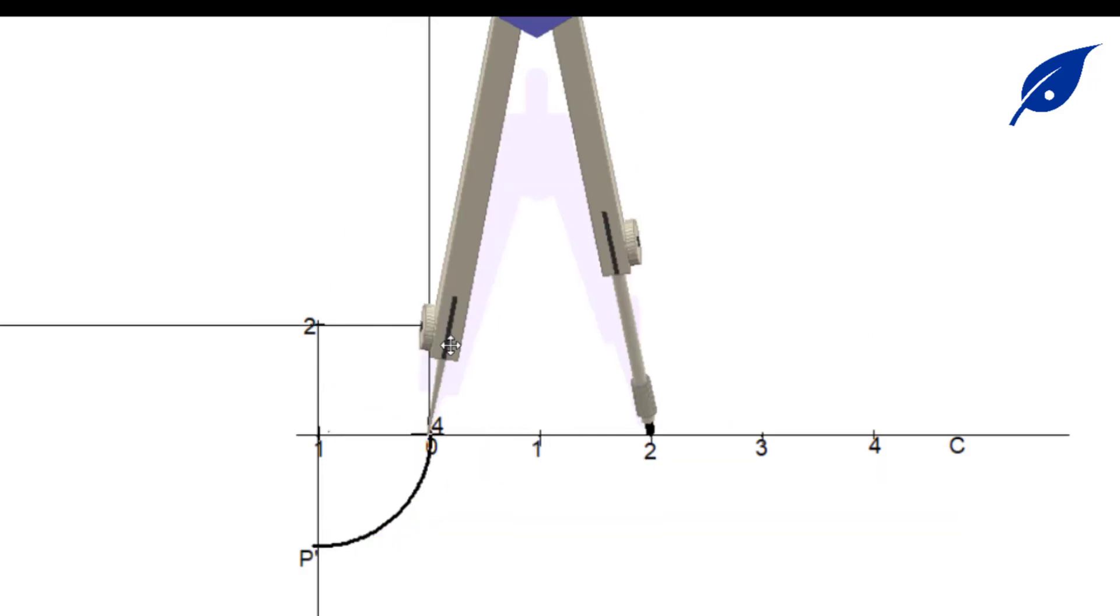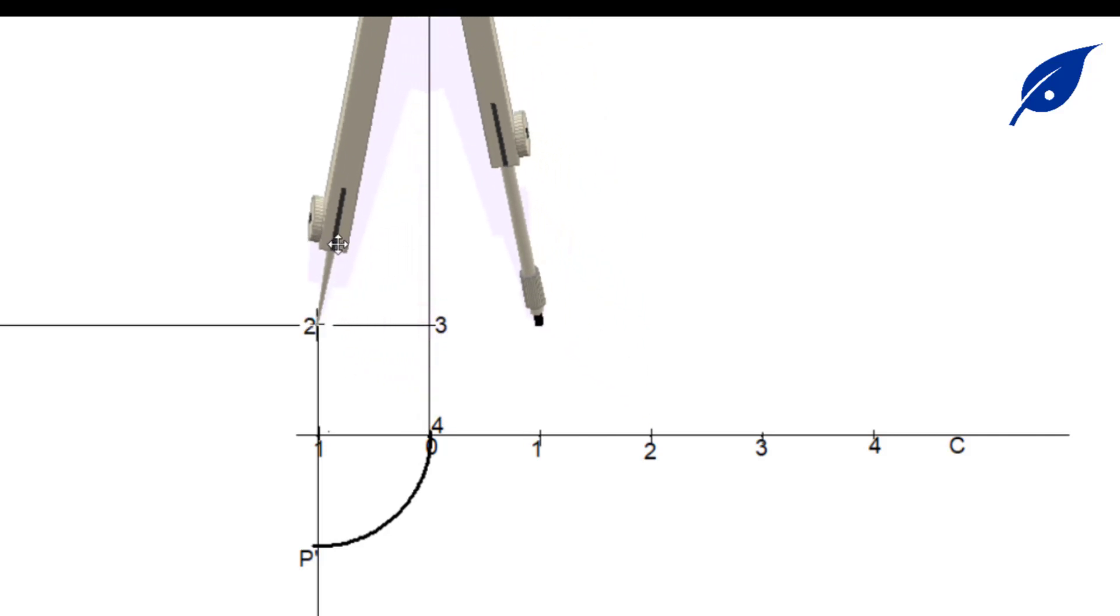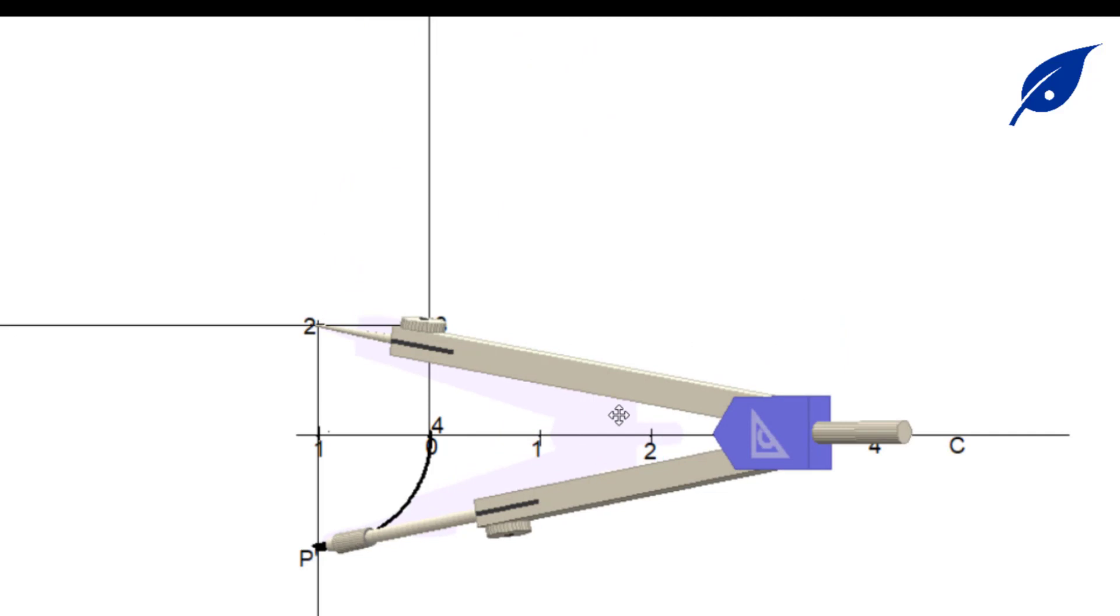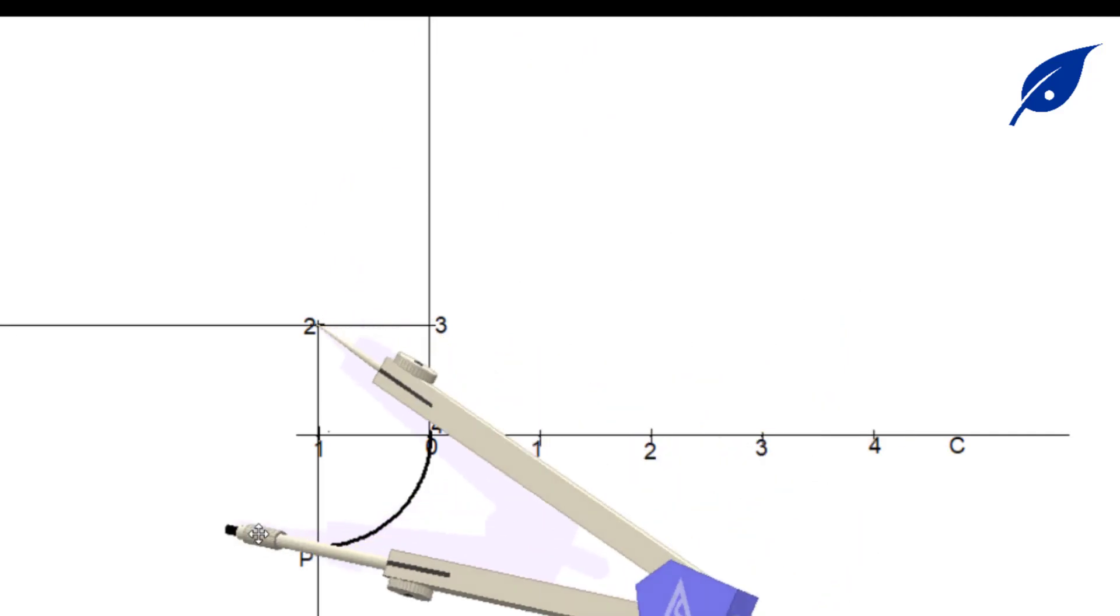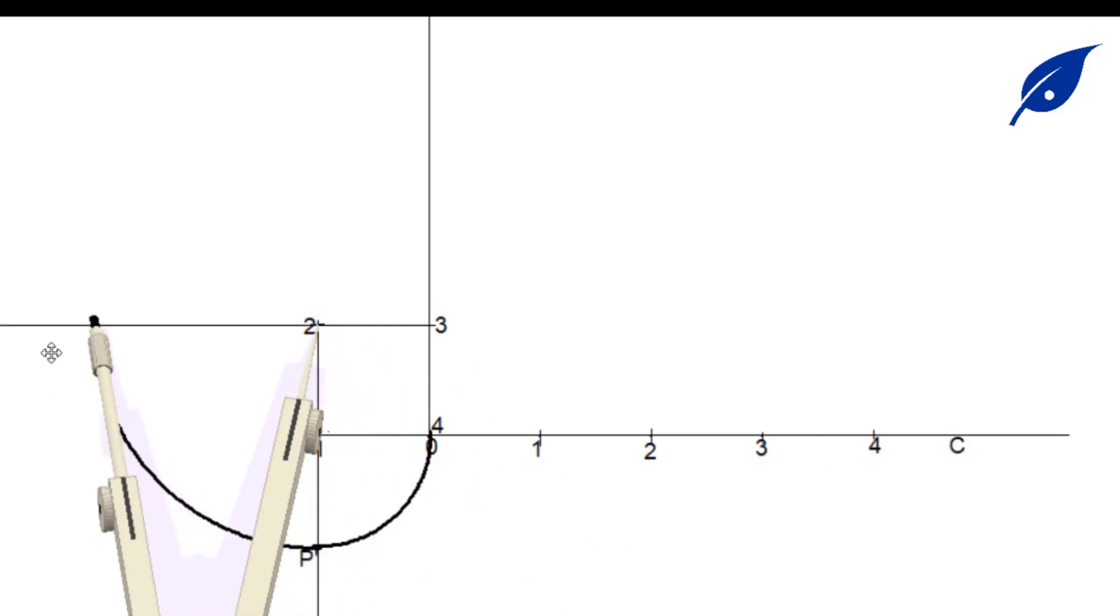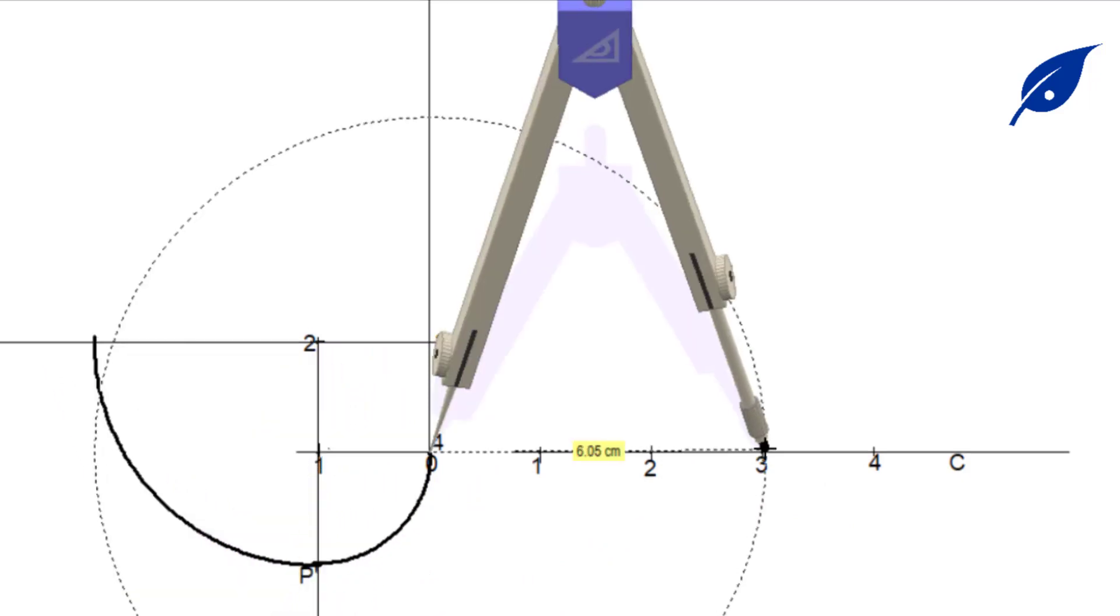After doing that, the distance zero to one, we put the center on one and we describe the arc. The same we do for two: from zero to two, put the center on two, then we describe the arc.